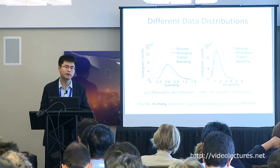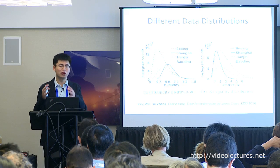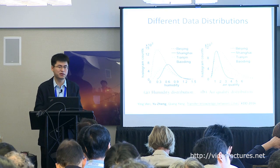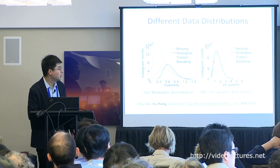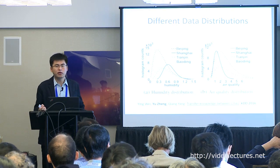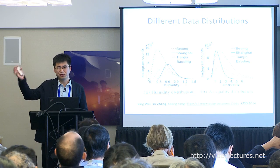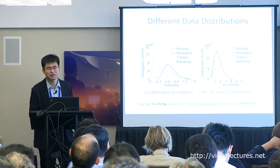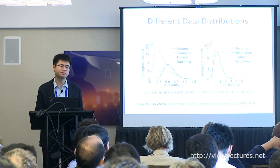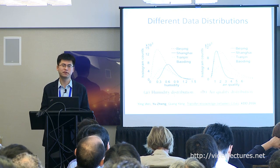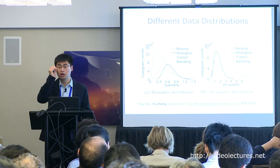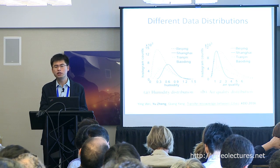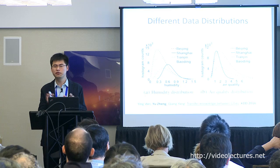Similarly, you cannot apply a model trained in New York City directly to San Francisco, because they have different traffic patterns and totally different instances. So what can we transfer and what can we not transfer?